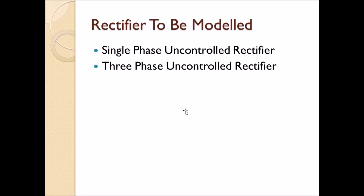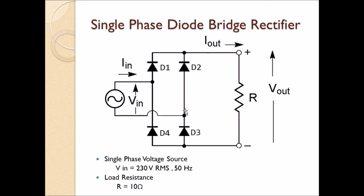In this video I will be explaining how we can develop a model for a single-phase uncontrolled rectifier and a three-phase uncontrolled rectifier. The single-phase diode bridge rectifier, as shown in the figure, consists of two legs; each leg consists of two diodes. AC voltage is connected at the input of the bridge rectifier and the output is connected to a resistive load of 10 ohms. The input voltage considered is 230 volt RMS at 50 hertz.